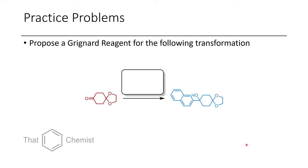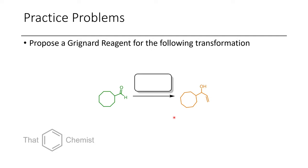So for this lecture, I'd like to assign two practice problems. First, propose a Grignard reagent for the following transformation. Actually, I'm going to assign a third problem in a minute, too. In this next example, I'd like you to do a similar exercise. Propose a Grignard reagent for the following transformation.